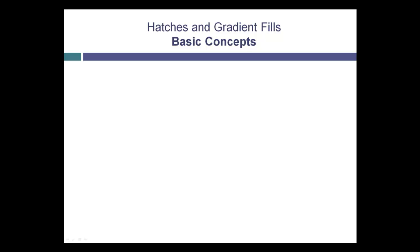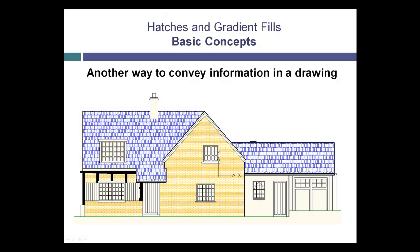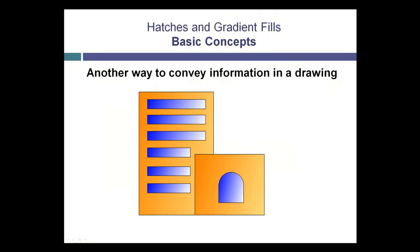Another way to convey information in a drawing is to fill areas with a solid color or repetitive pattern of lines. For example, you may need to represent the pattern of brick on the elevation of a building, or show the solid portions of metal in a cross section through a mechanical part. You can also fill areas with a gradient fill to add different types of graphic effects.